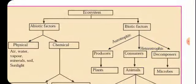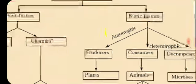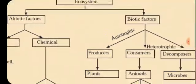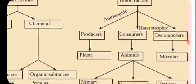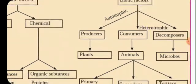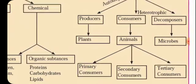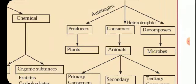Biotic factors are classified into three types: producers, consumers, and decomposers. Plants come under the category of producers. They are also called as autotrophs, self-feeders. Then consumers are of three types: primary consumers, secondary consumers, and tertiary consumers. And decomposers include microbes and fungi.